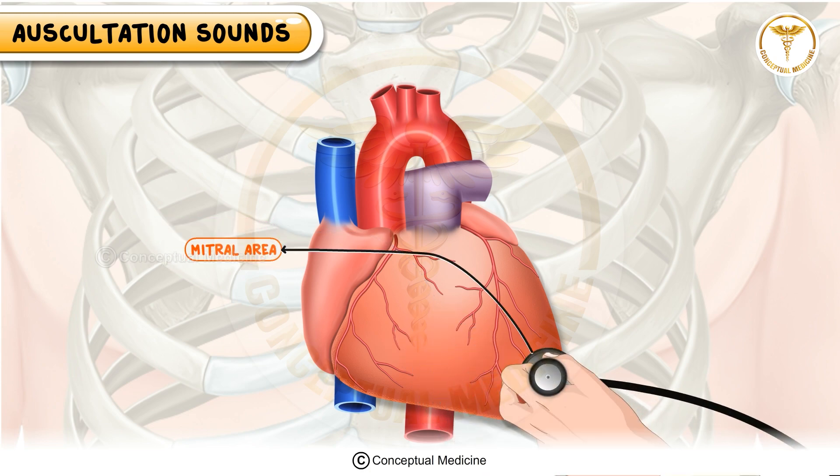The mitral area is positioned in the fifth left ICS along the midclavicular line, directly over the cardiac apex. This site is ideal for detecting mitral valve murmurs, and murmurs of mitral regurgitation often radiate to the left axilla.